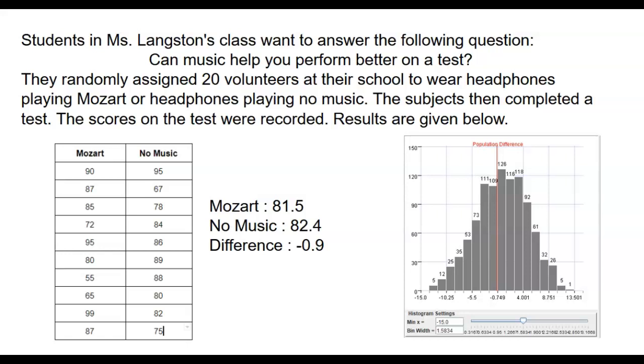There are also approximately 451 results that are greater than positive 0.9. This means there are 874 results that are more extreme than our original outcome, or 87.4%.